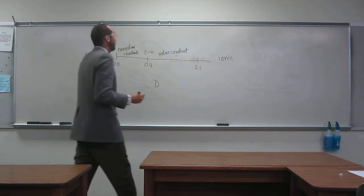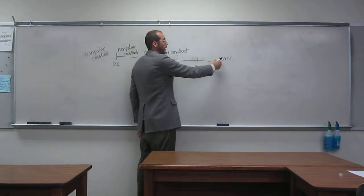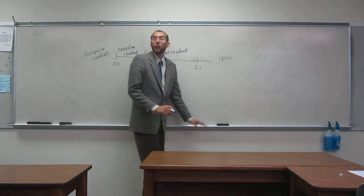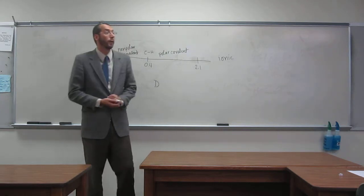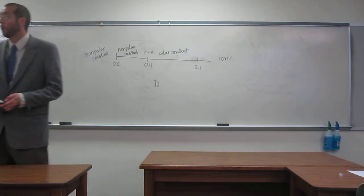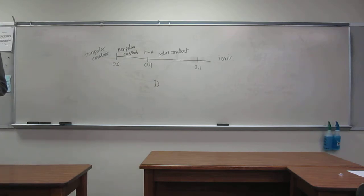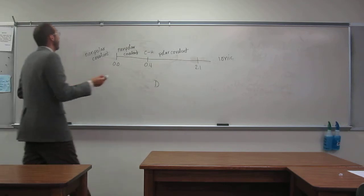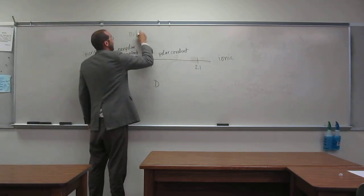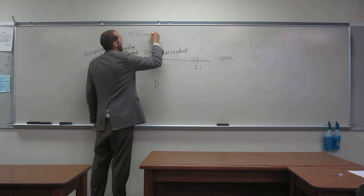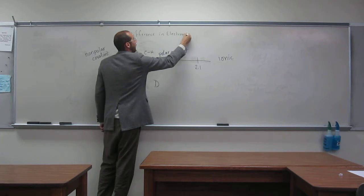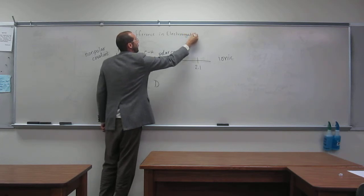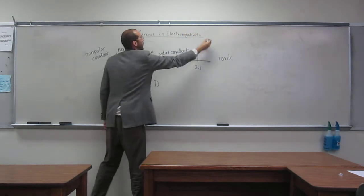Once you get to 2.1, then you're at ionic. Anything above 2.1 are all those salts and stuff like that, like sodium chloride, potassium bromide, or something like that. Very big difference in electronegativity. Is everybody okay with this? What we're talking about is difference in electronegativity.